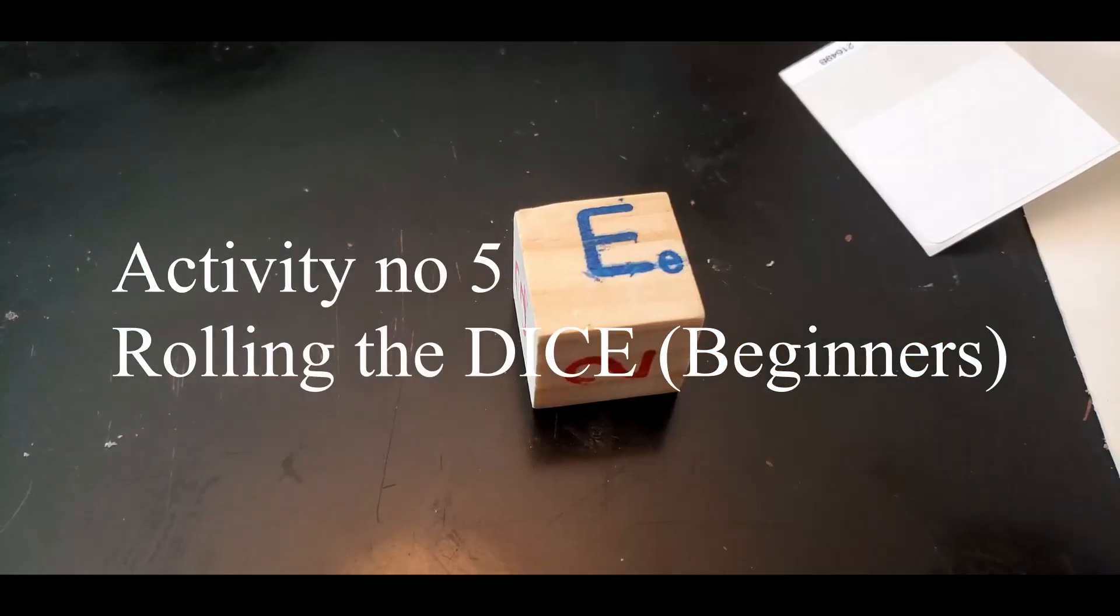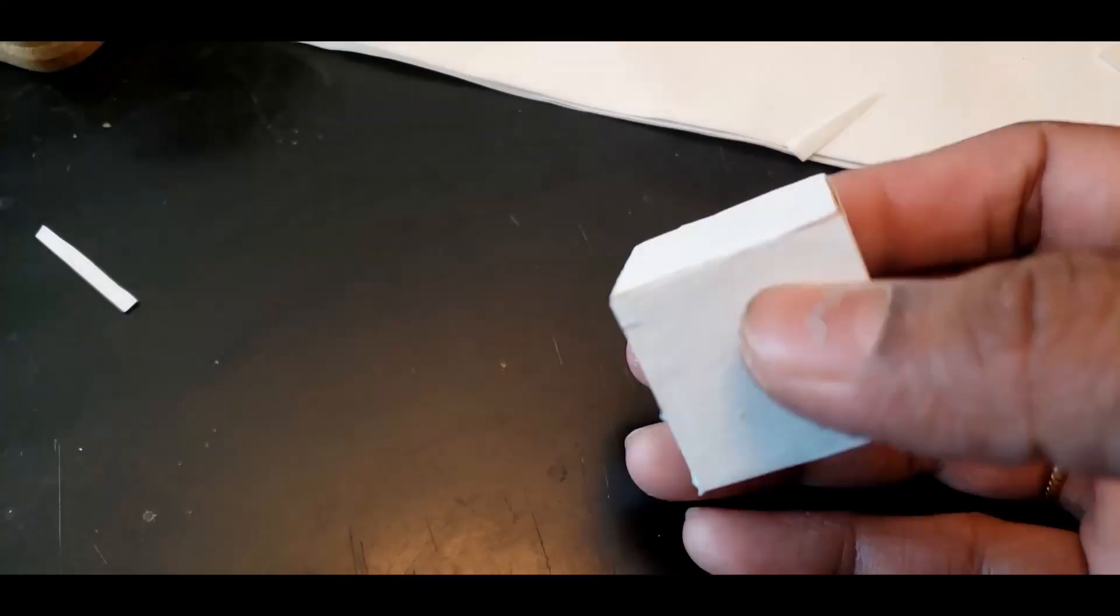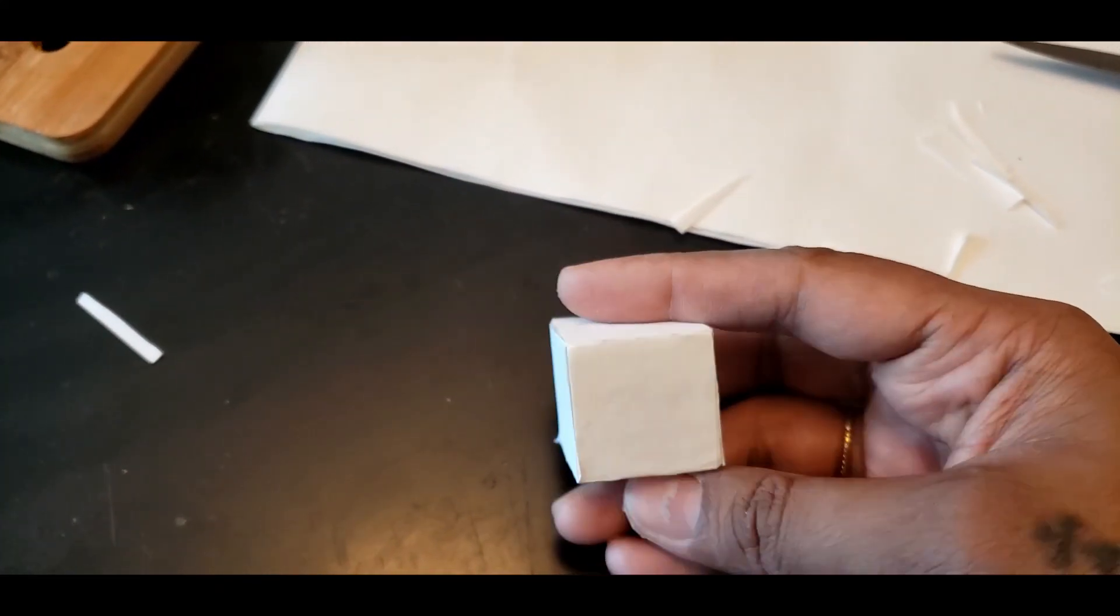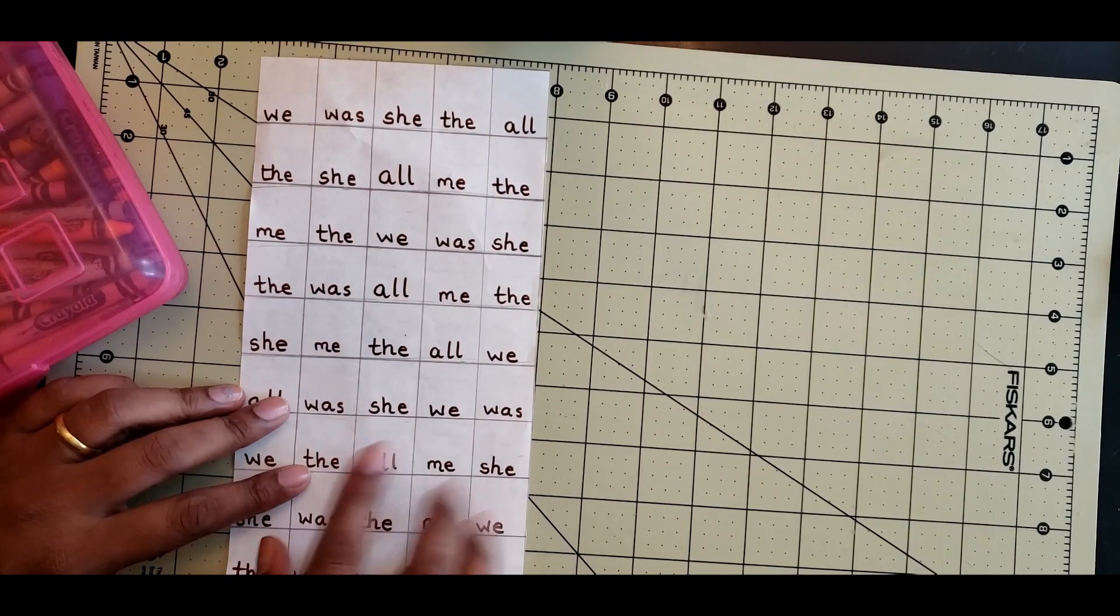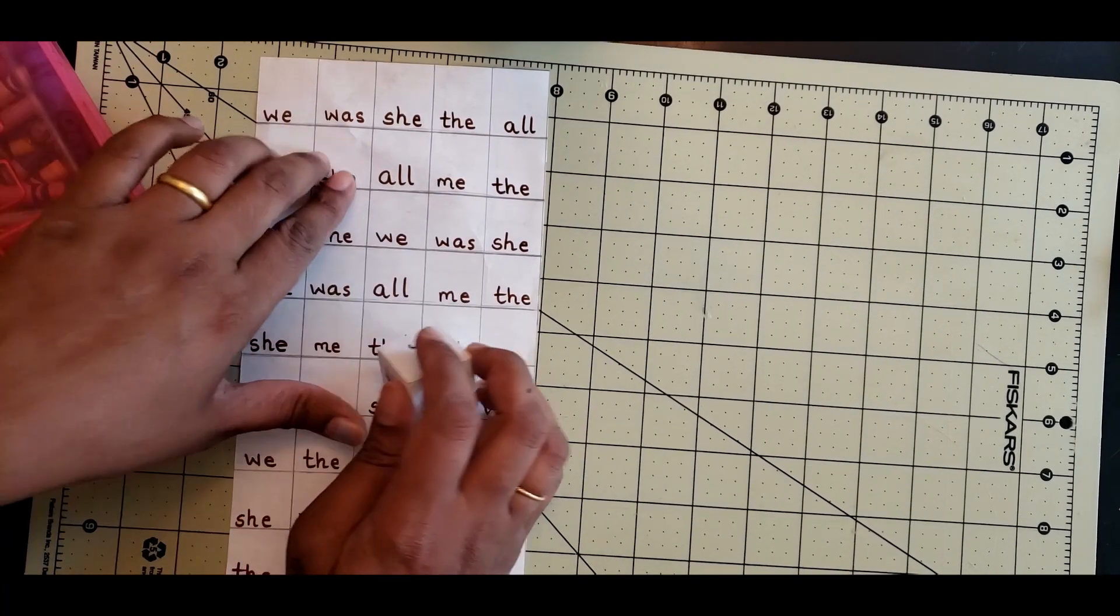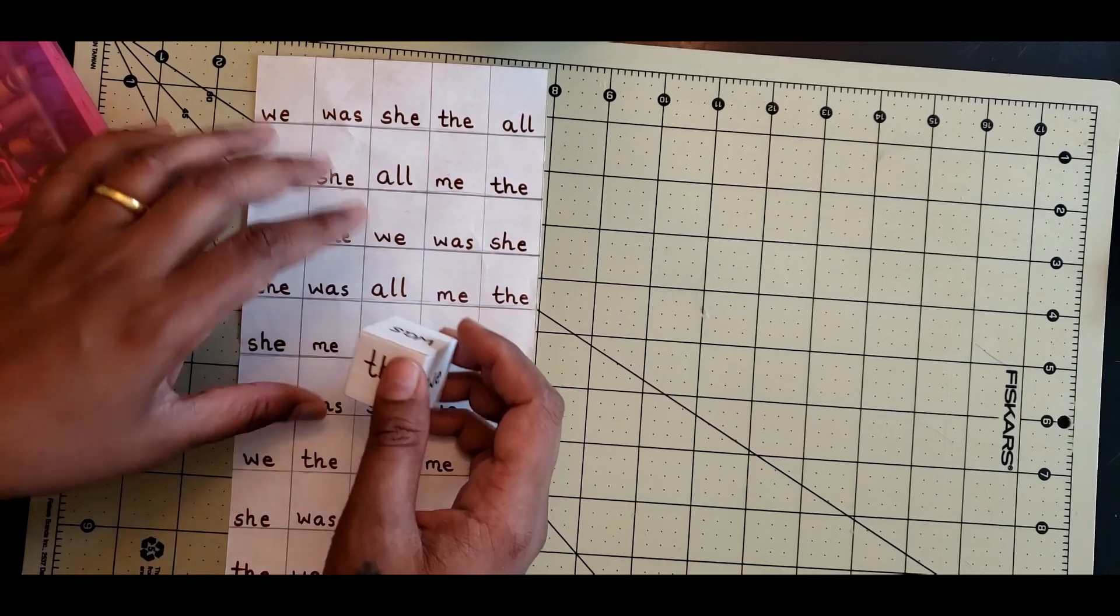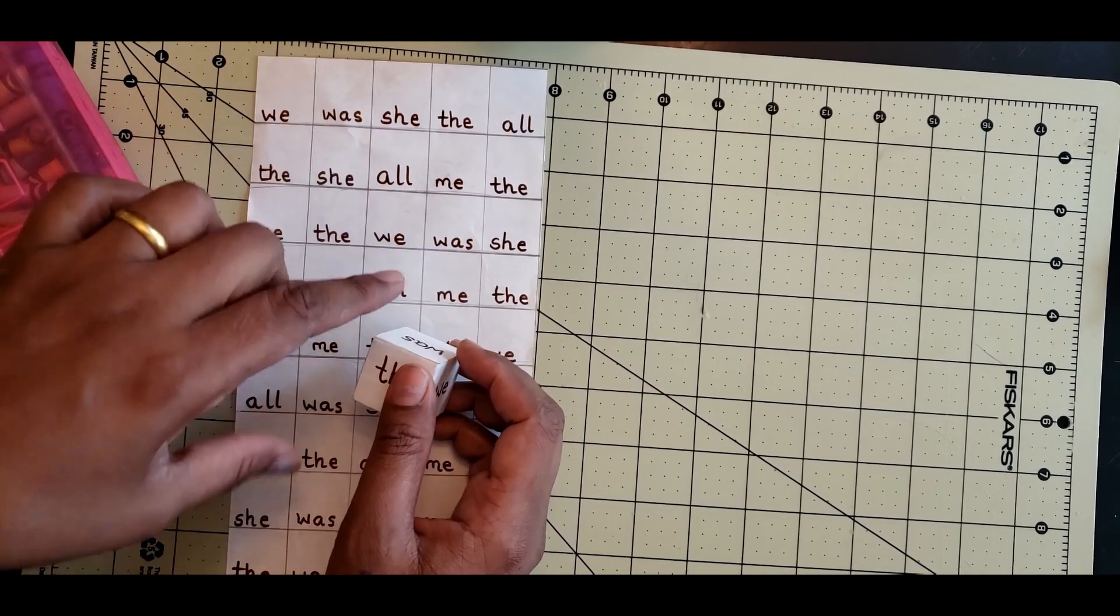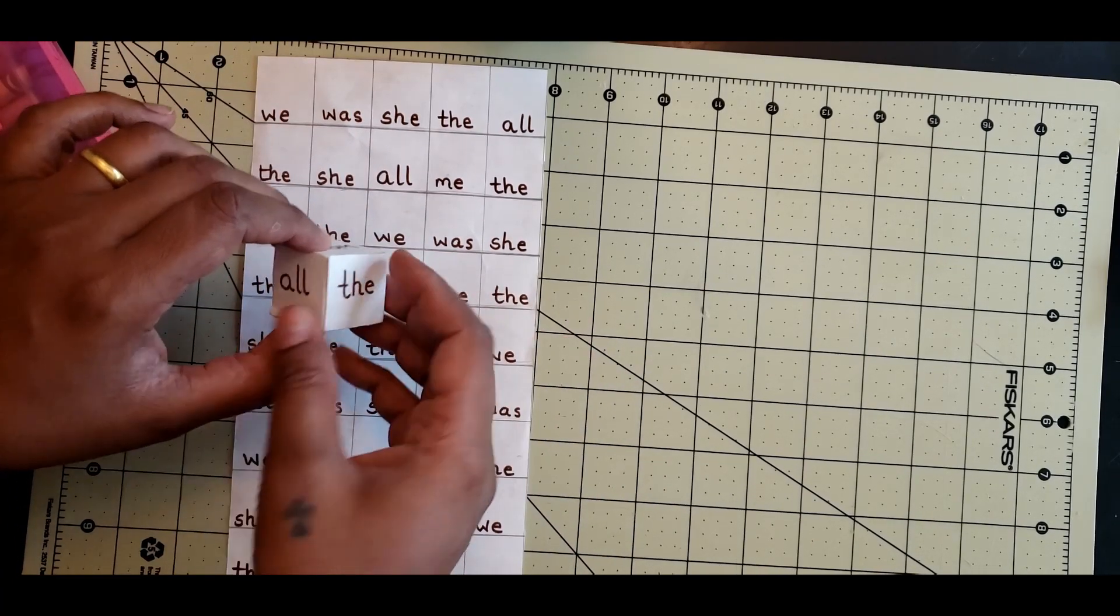Activity number five uses a wooden cube masked with white sticker. The purpose was so I could put sight words on each side of the cube, for a total of six sight words. I've used this grid and randomly assigned sight words, all six words alternating with a frequency of three to four on the sheet.